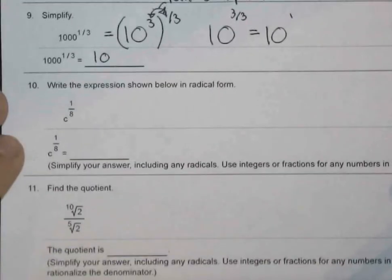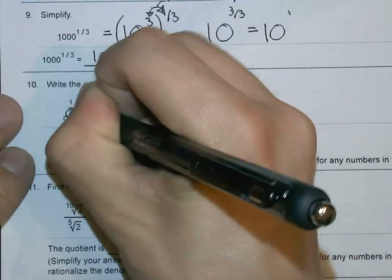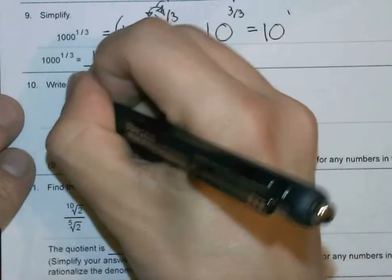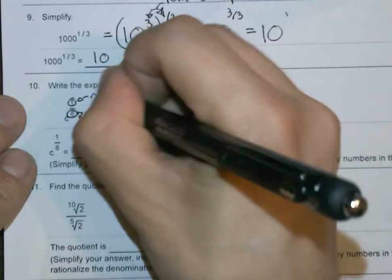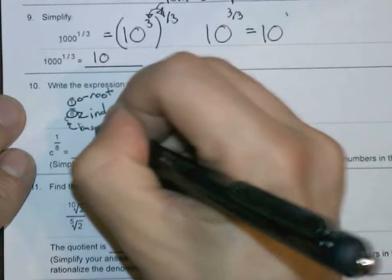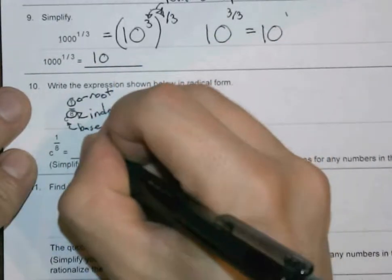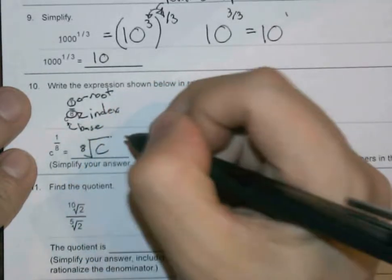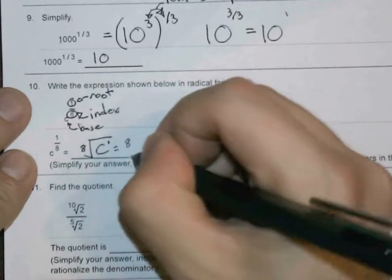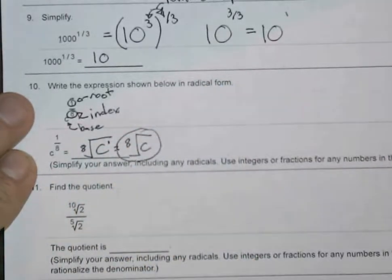Radical form, we have C to the 1/8th power. Break this apart. The denominator is our index. The top part is our root. C is our base. So our index goes outside. With 8 inside, we have C. We can leave an exponent of 1 here, but since it's just an exponent of 1, you could just leave the 8th root of C and be done with it.